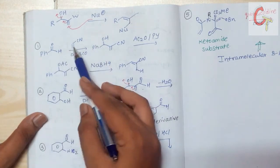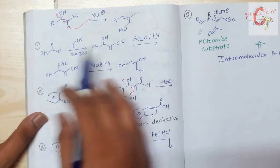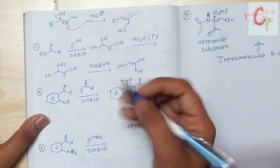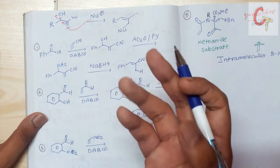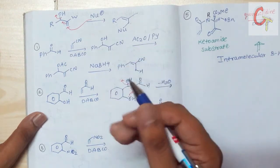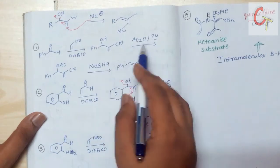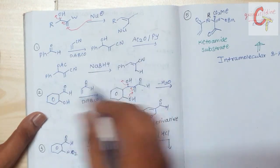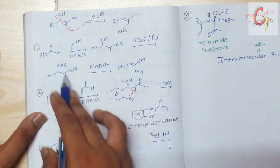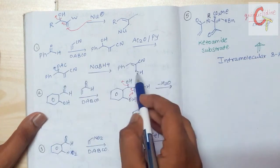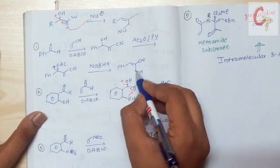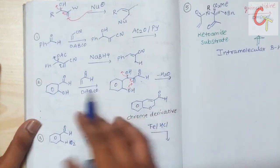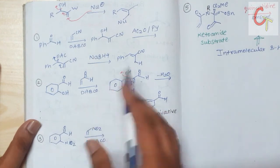In the first step, benzaldehyde and an alkene with a cyano group undergo the Baylis-Hillman reaction to form the addition product. The OH group is not a good leaving group, so it must be converted into a better leaving group such as OAc or OTs. In the second step, it is reacted with acetate in the presence of pyridine, converting the OH to OAc. This is followed by NaBH4 reduction, which removes the OAc group. The double bond migrates and reduction takes place at this carbon atom.